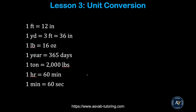There are a few unit conversions you need to know: 1 foot equals 12 inches; 1 yard equals 36 inches equals 3 feet; 1 pound equals 16 ounces; 1 year equals 365 days; 1 ton equals 2,000 pounds; 1 hour equals 60 minutes; 1 minute equals 60 seconds. Most of these you already know, but here is a refresher.